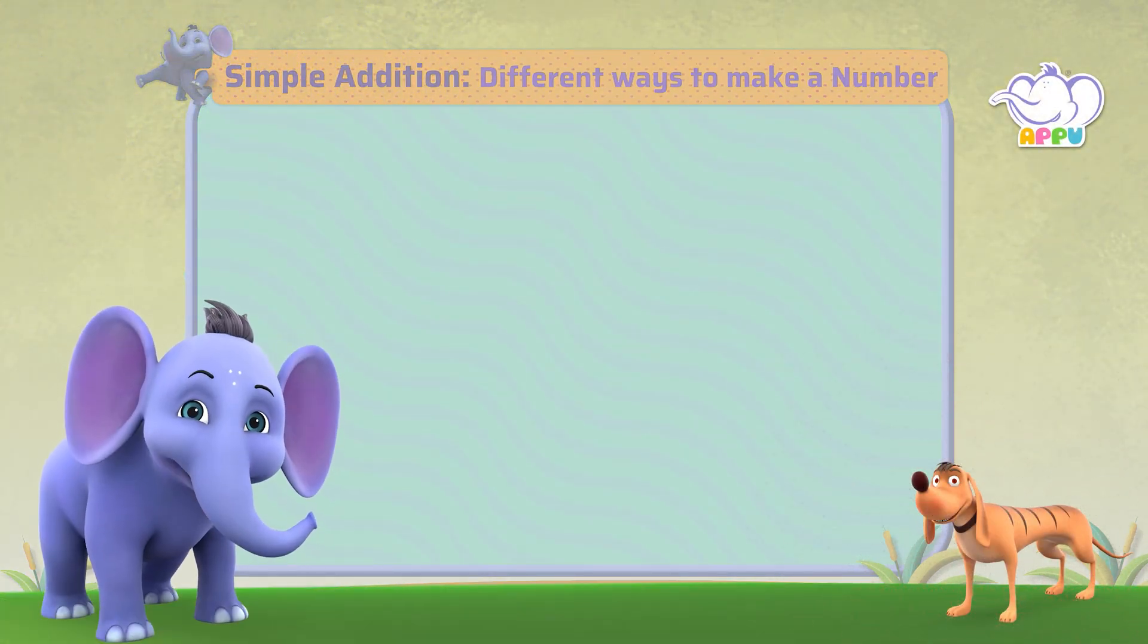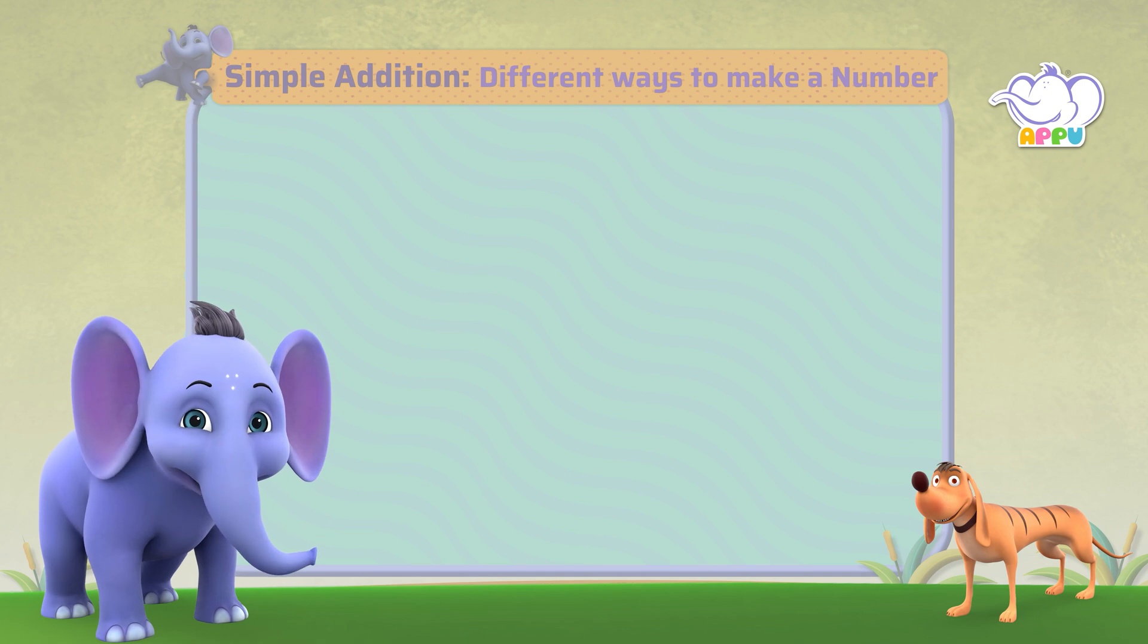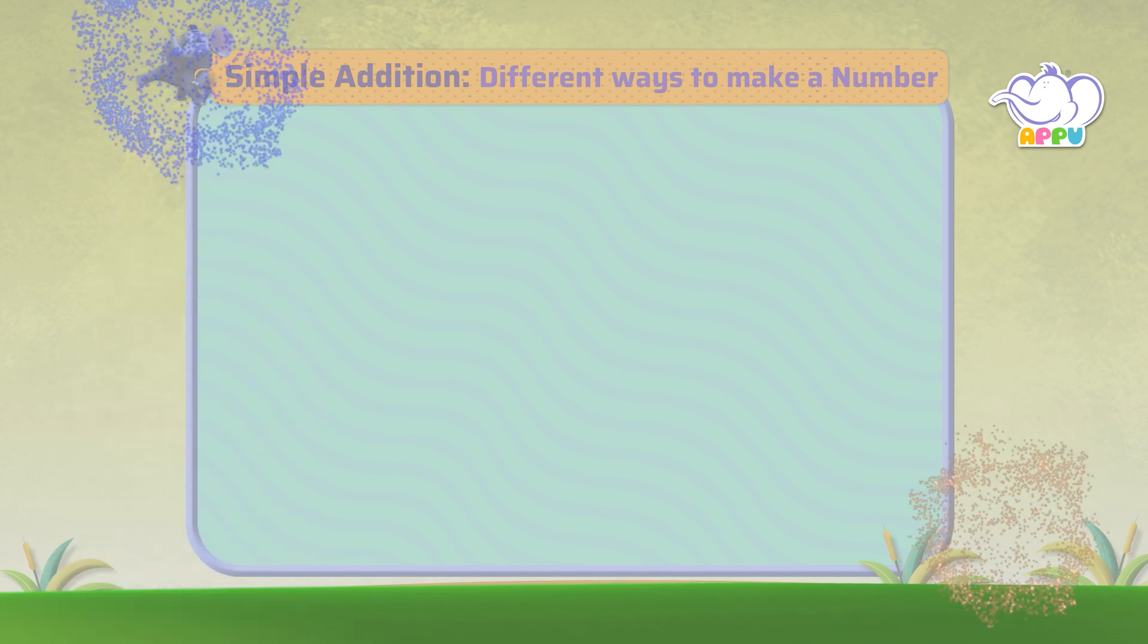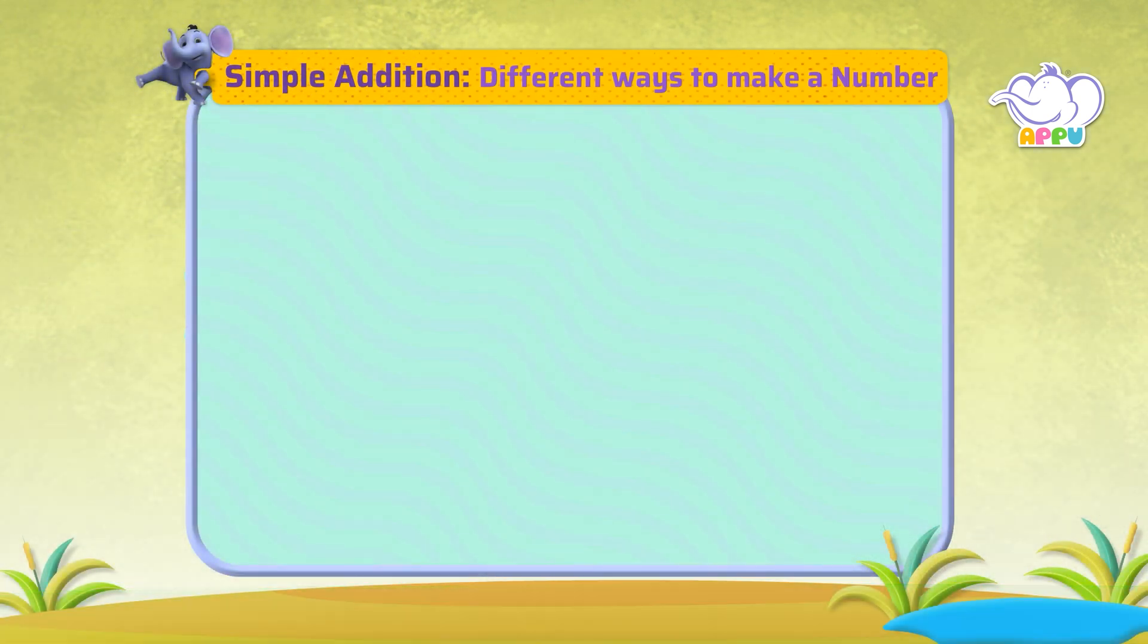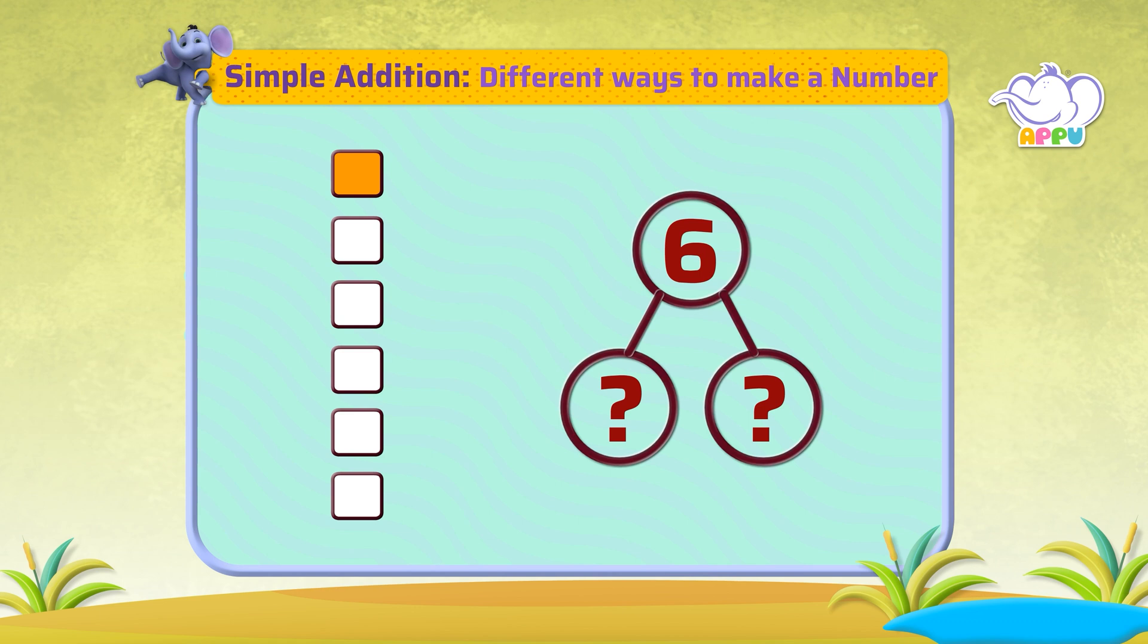Are you ready for what we have next? Let's see how we can make a number using different ways. Sounds great! Let's begin. Different ways to make a number - we have to write six in different ways. Let's do it.